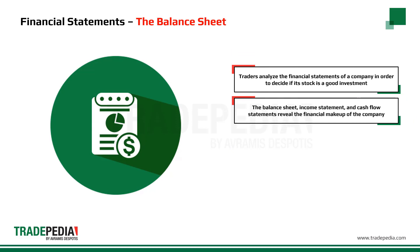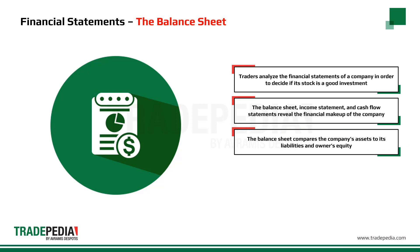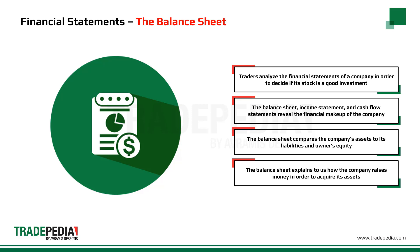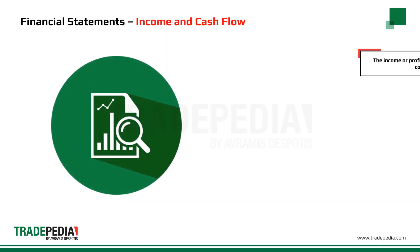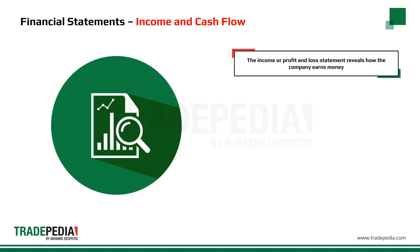The balance sheet, income statement, and cash flow statements reveal the financial makeup of the company. The balance sheet compares the company's assets like cash, equipment, and property to its liabilities or debts and owner's equity, which is the capital employed by the owners. The balance sheet explains how the company raises money to acquire its assets and how much is raised through debt and equity. The income or profit and loss statement reveals how the company earns money.